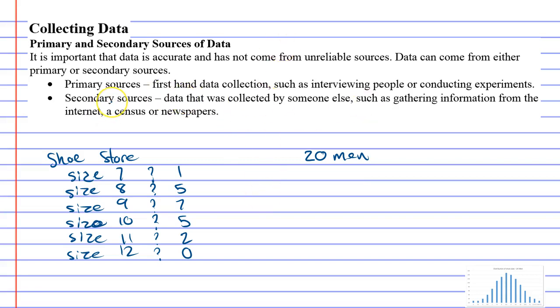The next one we're talking about is what's called a secondary source of data, and this is where data was collected by someone else and you're just, I guess you could say, stealing their data or looking at their data. This is quite often something that you get from the internet, such as a newspaper article, just by searching something on Google, or looking at census documents and things like that.